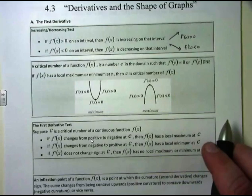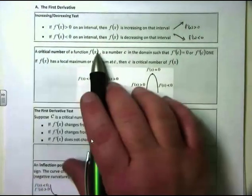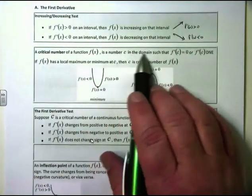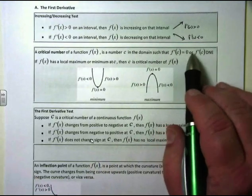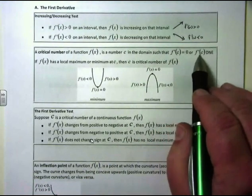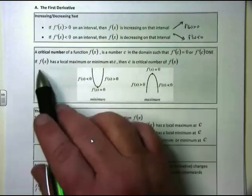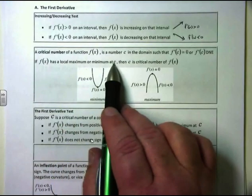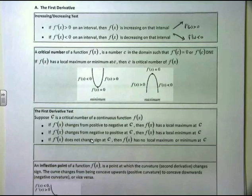As we defined before, a critical number of a function is a number c in the domain such that either f'(c) equals 0, or possibly where the derivative does not exist. If f(x) has a local maximum or minimum at c, then c is called the critical number of f(x).